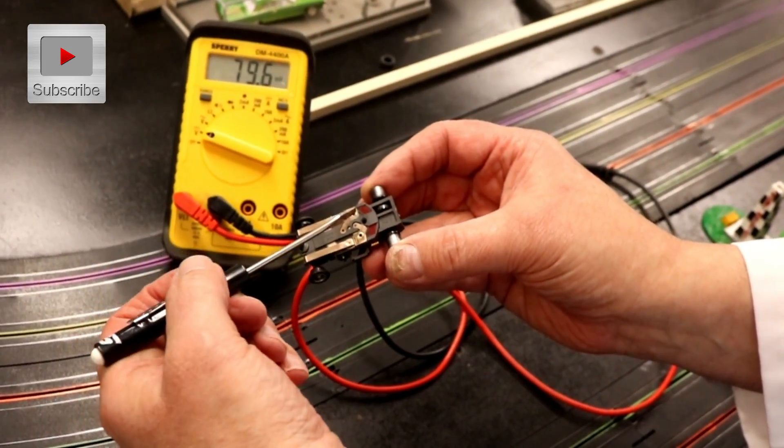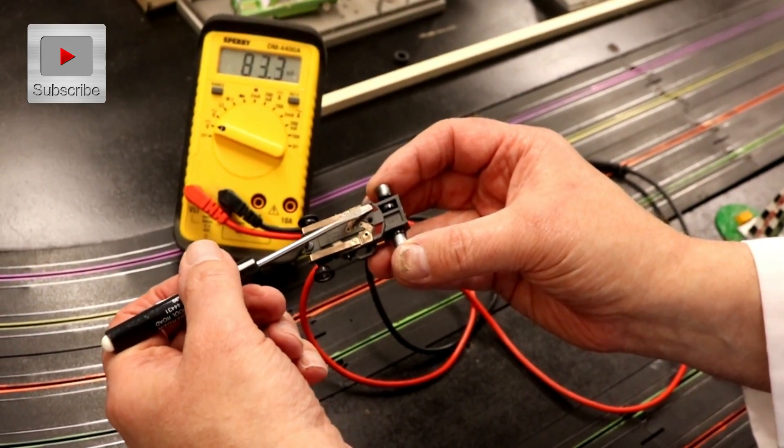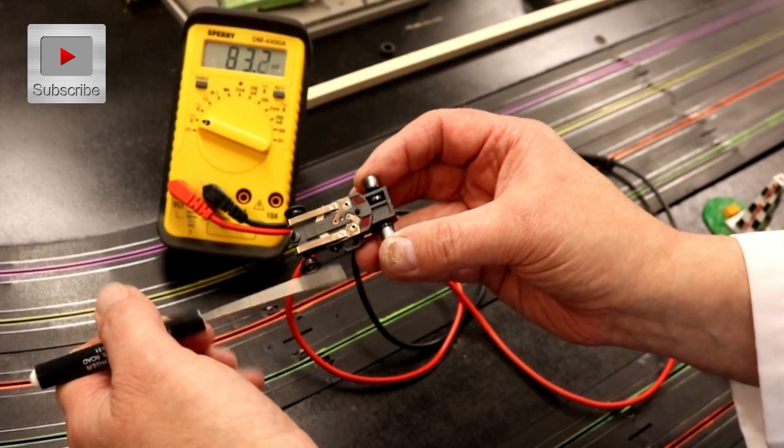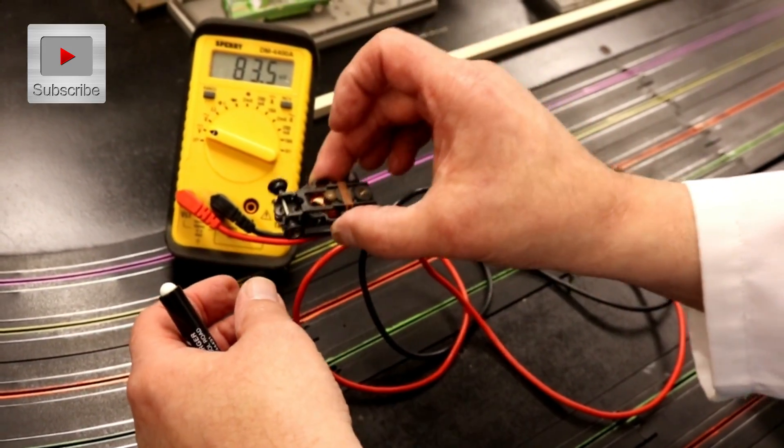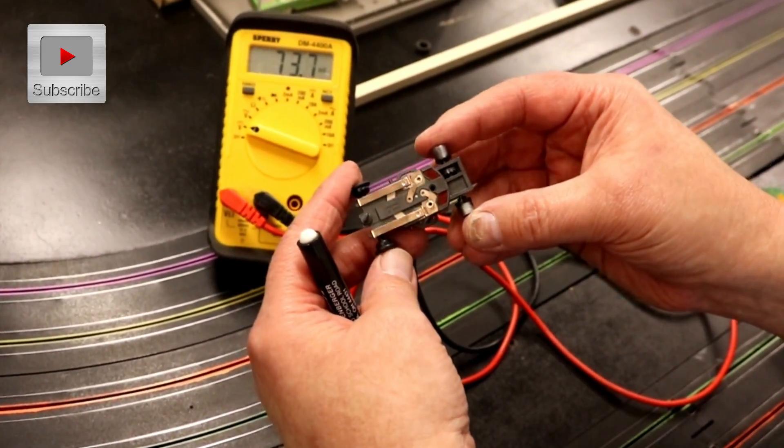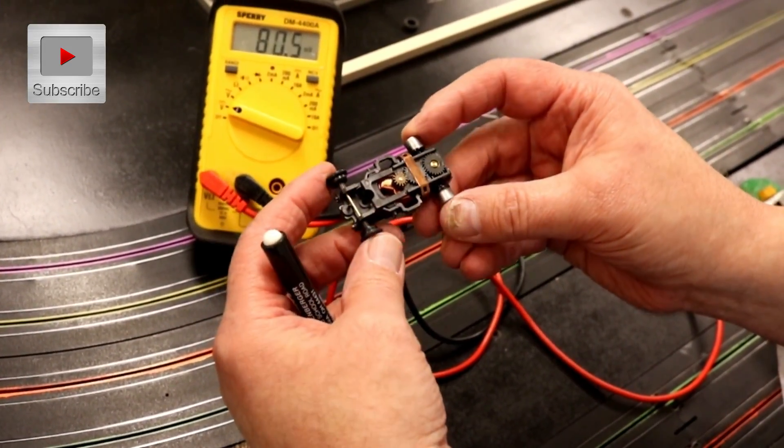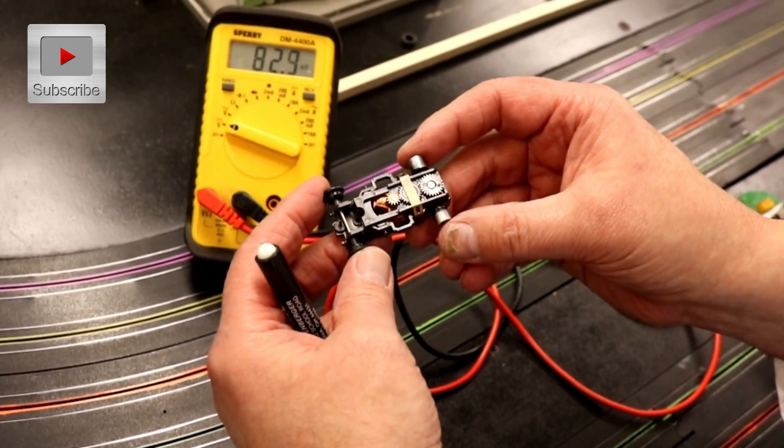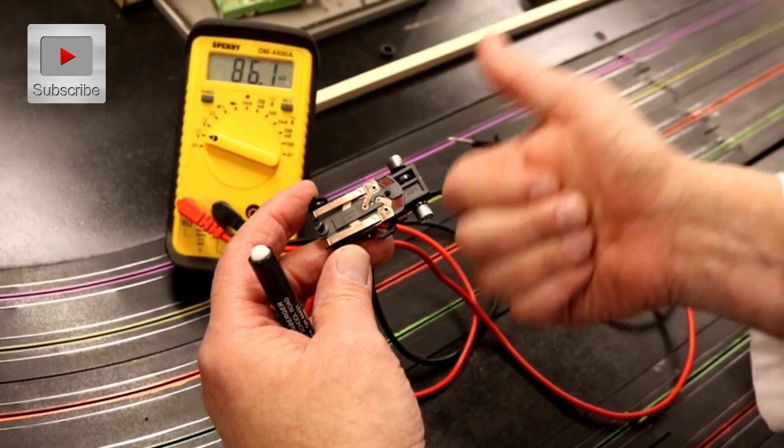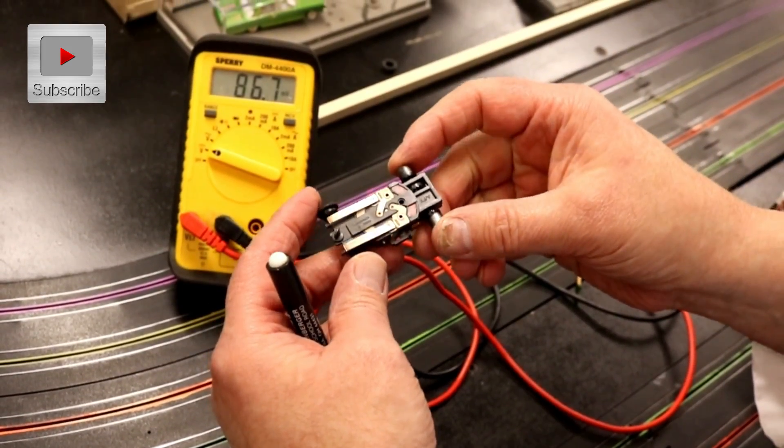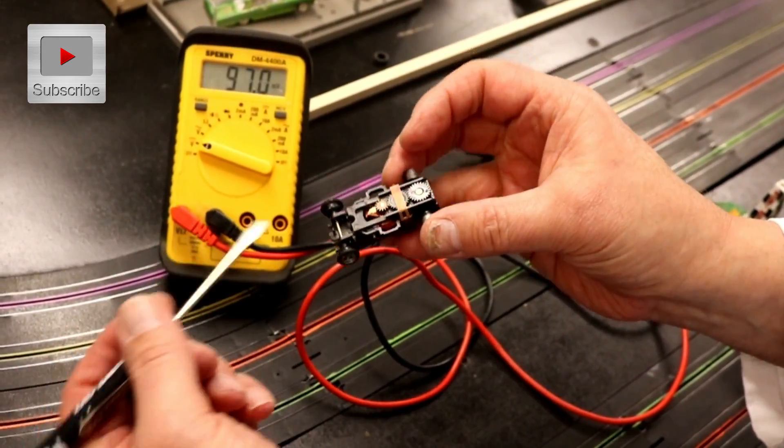Now the non-magnet traction, all it is is the motor magnets shorter and it doesn't show like this one does. This holds it tighter to the track where you can actually race the car a little bit better. This is the AFX magnet traction, Aurora factory experimentals, AFX. So that's the car.